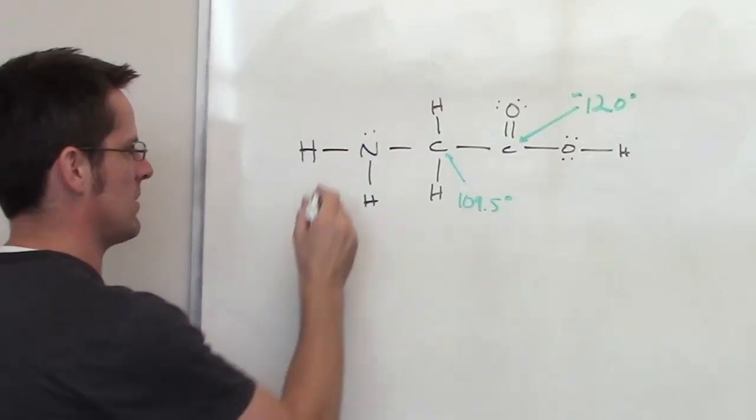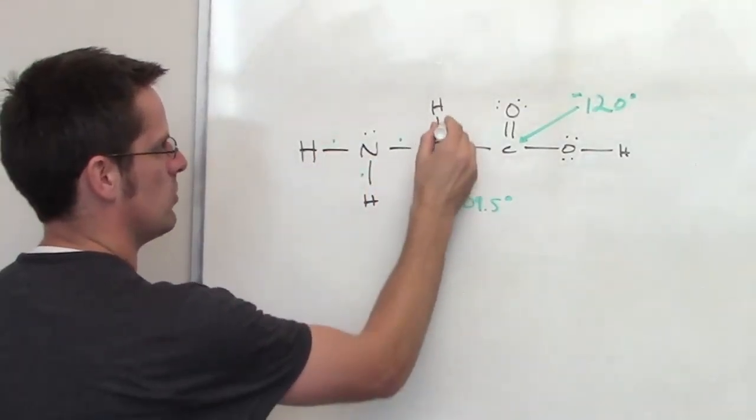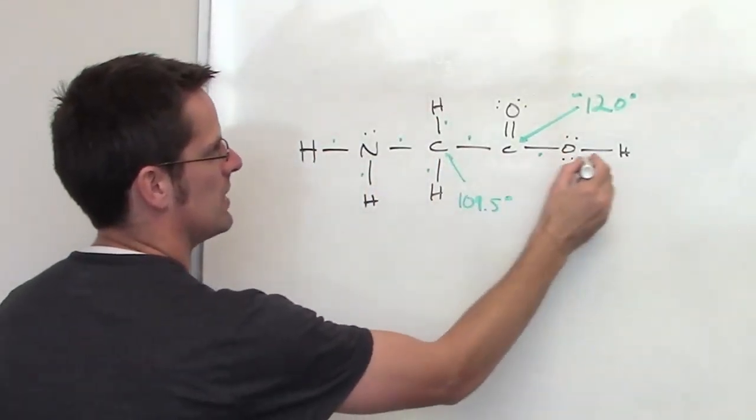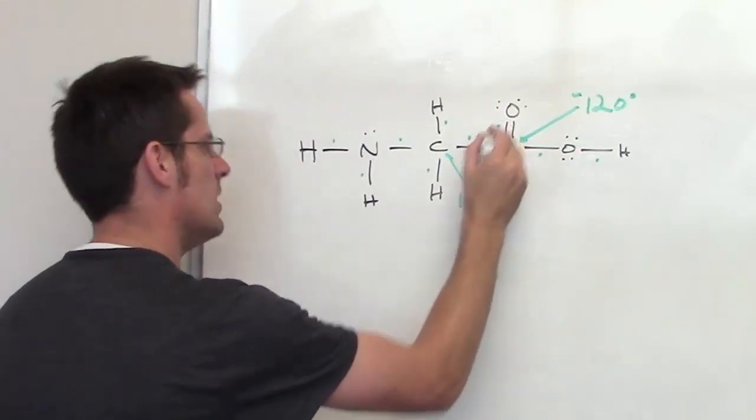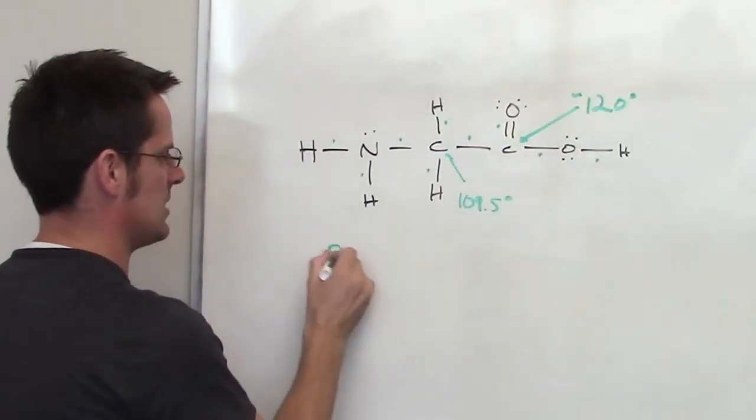So let's count up my sigmas. I've got one, two, three, four, five, six, seven, eight, and I've got a double bond which contains one sigma. So that's nine sigmas.